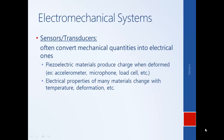Another class of sensor works on the basis that electrical properties of some materials change with mechanical properties. For example, a thermistor works on the basis of its resistance changing with temperature. A strain gauge works on the basis of its resistance changing with deformation or stretching. And pressure transducers generate electrical signals in proportion to pressure based on changes in resistance, capacitance, or inductance depending on the construction of the transducer.